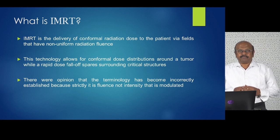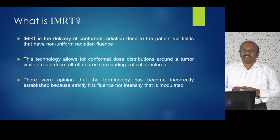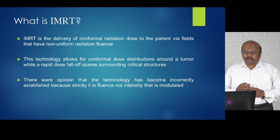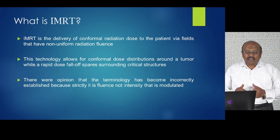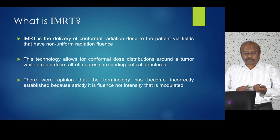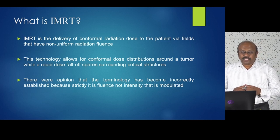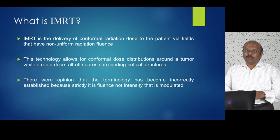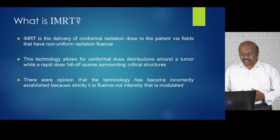What is IMRT? IMRT is delivery of conformal radiation to the patient via fields that have non-uniform radiation fluence. This technology allows for conformal dose distribution around the tumor while achieving rapid fall-off of dose to surrounding critical structures or normal structures. Initially there were opinions that the terminology was incorrectly established because strictly it is fluence, not intensity, that is modulated. However, we are now used to saying intensity modulated radiotherapy.